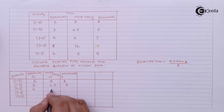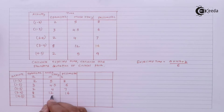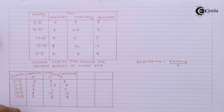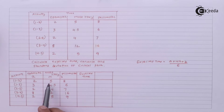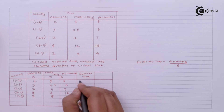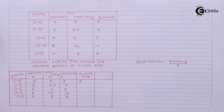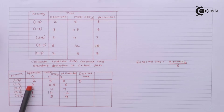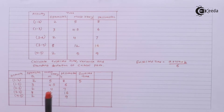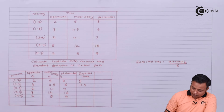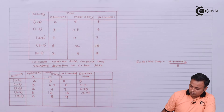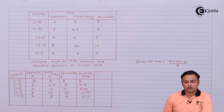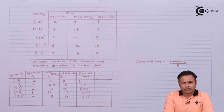Calculating the expected times: Activity 1 - 2 + 20 + 8 = 30, divided by 6 = 5. Activity 2 - 3 + 18 + 6 = 27, divided by 6 = 4.5. Activity 3 gives 6.25. Activity 4 gives 12. Activity 5 gives 5.17. So the expected times for the five activities are 5, 4.5, 6.25, 12, and 5.17.